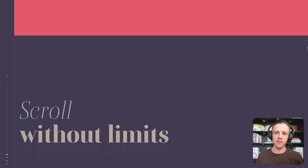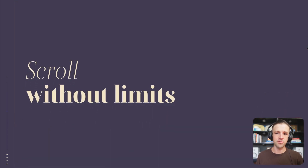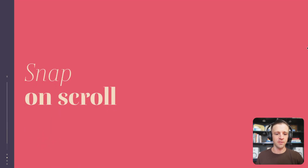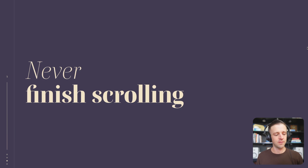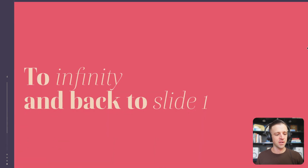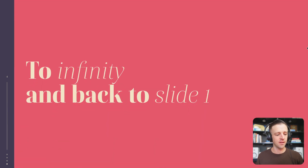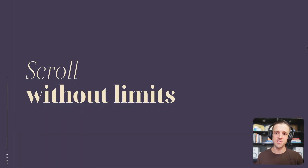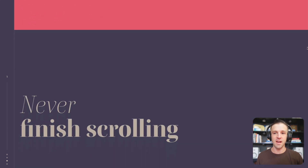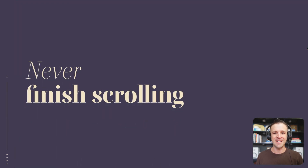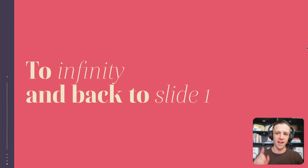Are you even a Webflow dev if you don't build vertical scroll snapping sliders with Swiper.js? Today I'm going to show you how to build this thing. We're also going to explore CSS transitions so that the text animates, as well as using GSAP for that little line indicator thing on the left. Anyways, check it out.